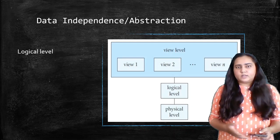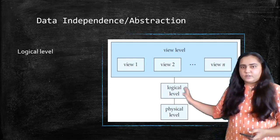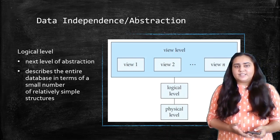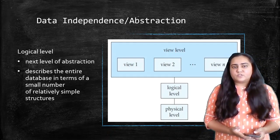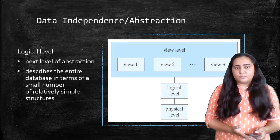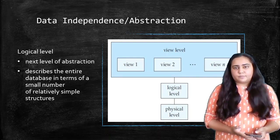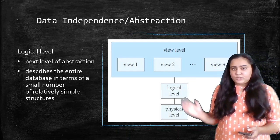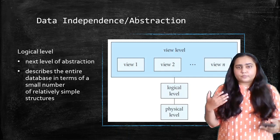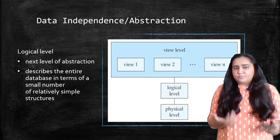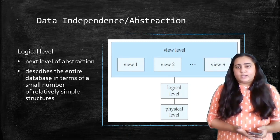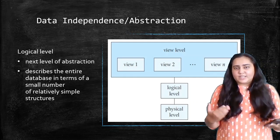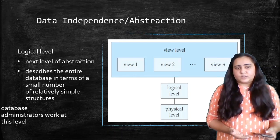The second level after the physical level is the logical level — the next level of abstraction. This describes the entire database in terms of a small number of relatively simple data structures. The physical level also uses data structures, but the logical level uses still simpler data structures like B-trees and indices, which are used to create an index for your database for faster access to data.